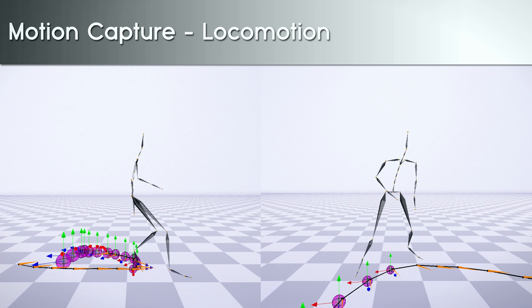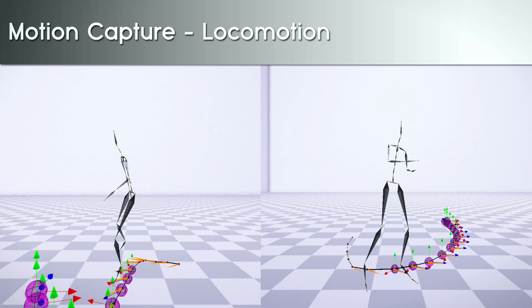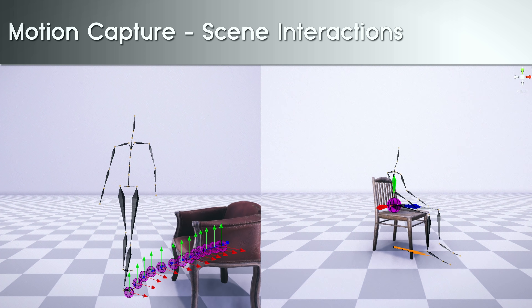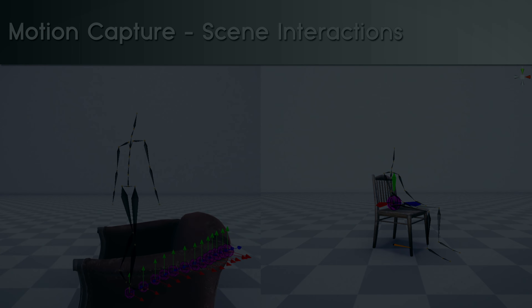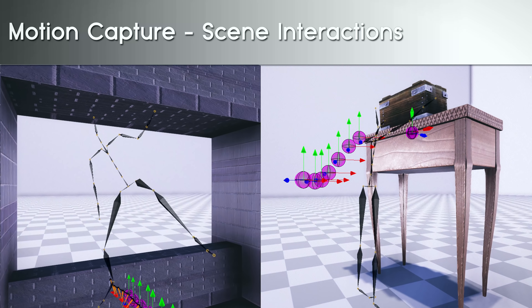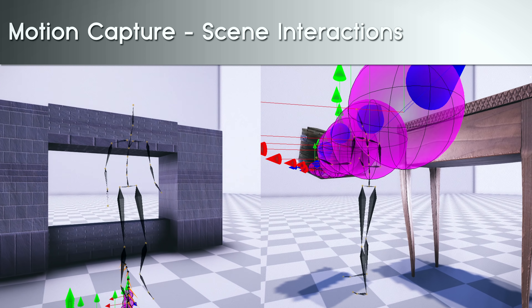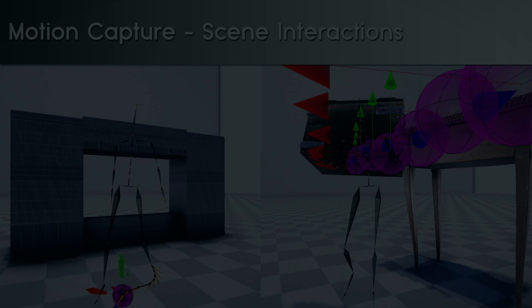We captured motions of walking and running in different directions as well as doing sudden turns and sidesteps. We then set up objects of different geometry and captured various scene interactions and transitions from different starting locations. Our complete dataset contains two hours of motion capture data.